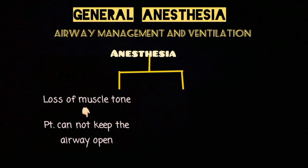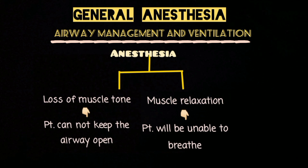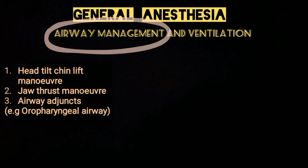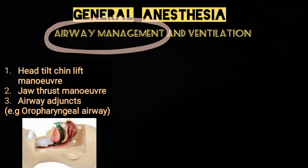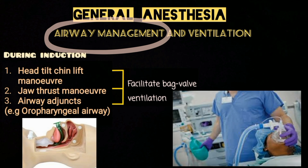In a state of anesthesia, due to loss of muscle tone, the patient can no longer keep their airway open, and the use of muscle relaxants means the patient will also be unable to breathe. Proper airway management and artificial ventilation are therefore required. Head tilt chin lift and jaw thrust maneuvers, along with adjuncts such as oropharyngeal airways, are used to facilitate bag-valve ventilation while induction agents exert their full effect.